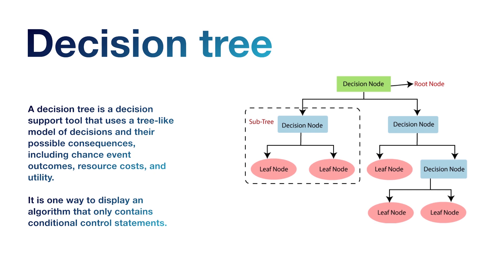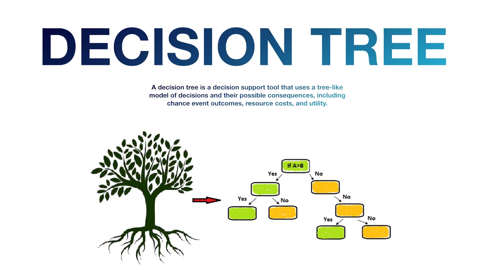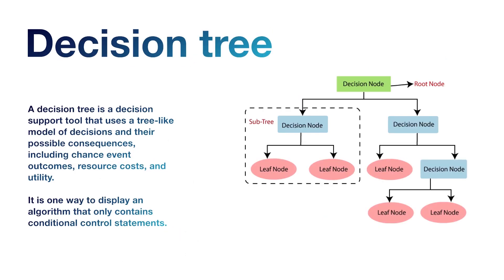A decision node is the root node. If it works, we take the leaf node. It is considered a decision node and leaf because it looks like a tree — from the branch it separates into smaller branches, from smaller branches into leaves, and from leaves into veins. That is how a decision tree is structured.